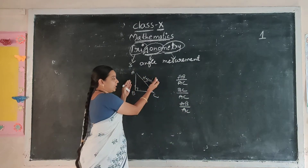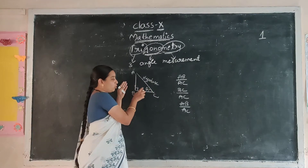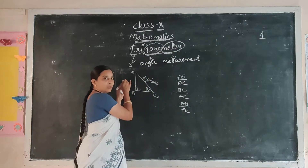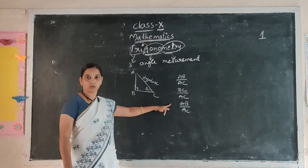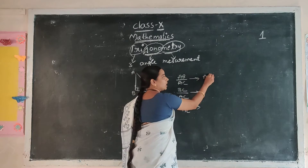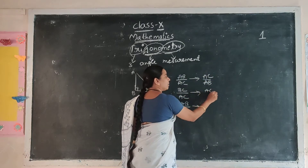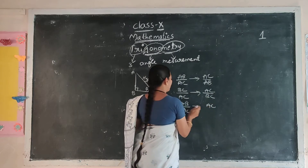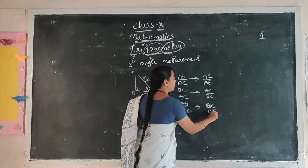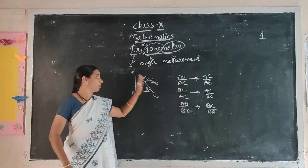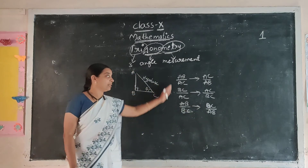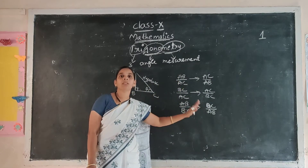Suppose here we put an angle theta. Through this theta, this is opposite by hypotenuse, adjacent by hypotenuse, and opposite by adjacent — those three ratios. And the remaining three ratios are reciprocals of each other. That means reversed: AC by AB, AC by BC, and BC by AB. So totally six ratios.